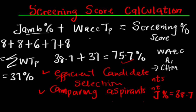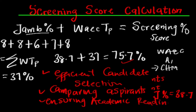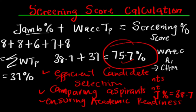The third importance is ensuring academic readiness. Schools do not want to choose a student who is not ready for academic activity. They believe that anybody that scores below the cutoff mark does not fit into that department, no matter how brilliant you are. Your screening score is what they will use to determine whether you can fit in or not.